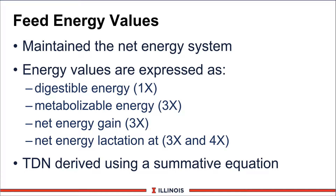Energy values have been maintained on the net energy system, so this did not change from the 1989 NRC. If you go to the energy tables, however, there are a number of different ways of expressing energy values. They include digestible energy at 1x maintenance, 3x metabolizable energy at 3x maintenance, which is where most of our higher producing cows will be, net energy gain at 3x for rapidly growing heifers, and net energy lactation at 3 or 4x. All these energy values are expressed in the feed table when you go through the booklet.